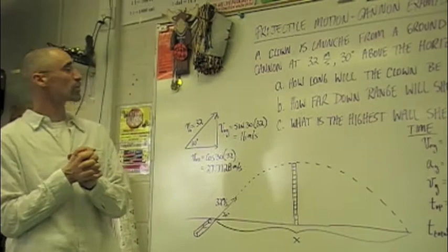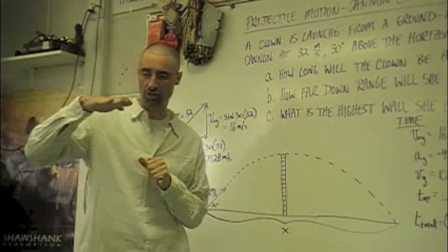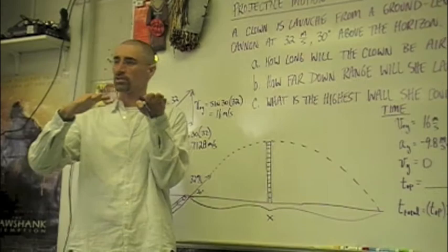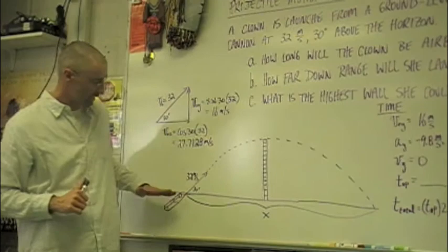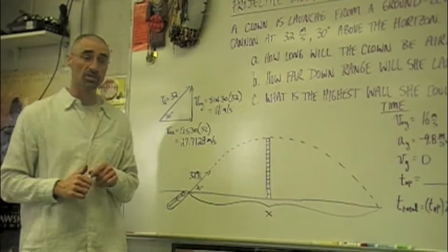Okay guys, today we're going to be looking at projectile motion with a cannon example. Yesterday we looked at one where we shot something horizontally, like dropping a torpedo out of a plane where you're flying horizontally and you just drop it. In this case though we're going to launch something with velocity initially in both the x and the y direction.